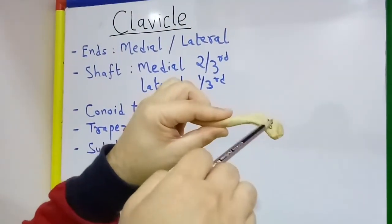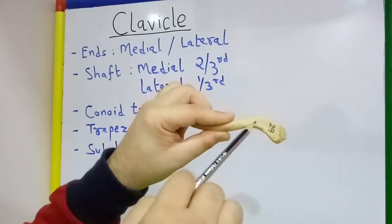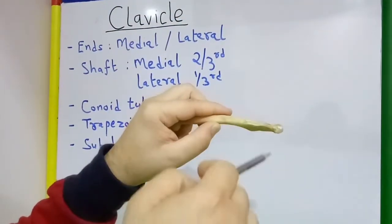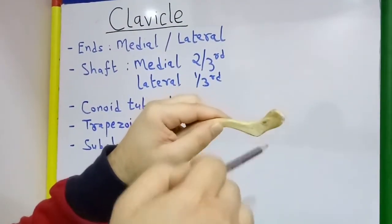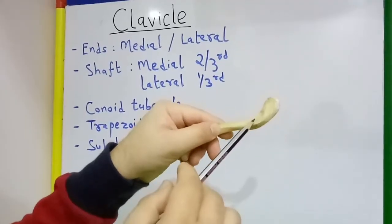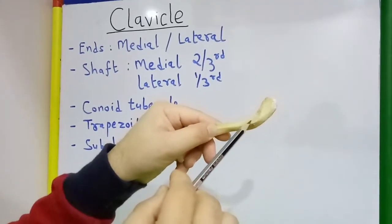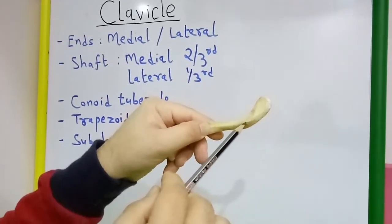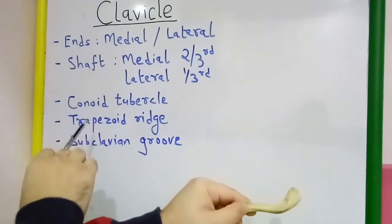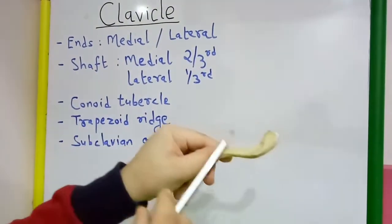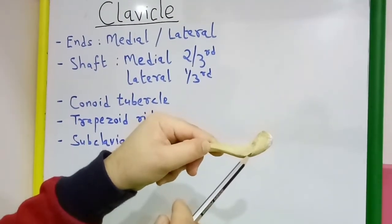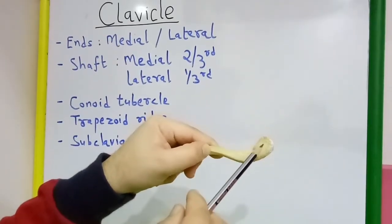The superior surface is subcutaneous, and on the inferior surface we can see a tubercle. This tubercle is known as the conoid tubercle, and from the tubercle there is a ridge running laterally.